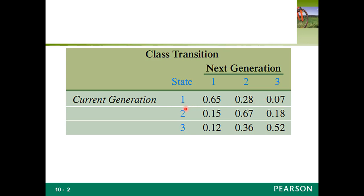If you are in state two, middle class, the probability of going from middle class to upper class for the next generation would be 0.15. Notice that the highest numbers are along the diagonal, because the strongest determinant by sociology is the parents' class. This matrix represents the probability of transitioning from one class to another class from the current generation to the next generation.